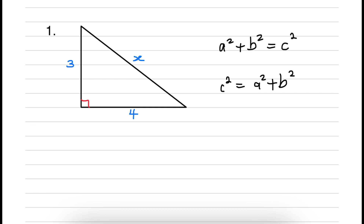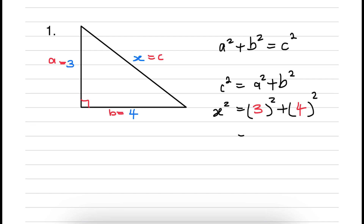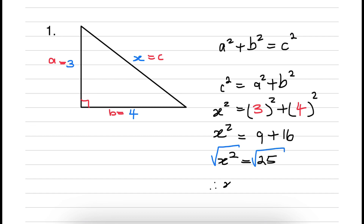Let's substitute C with X, let A be 3, and let B be equal to 4 — the values you see on the triangle. Substituting in gives us X squared equal to 3 squared plus 4 squared. 3 squared is 9 and 4 squared is 16. Adding these up: 9 plus 16 is equal to 25, and the square root of 25 is equal to 5. So therefore X is equal to 5, and that is the length of the hypotenuse.